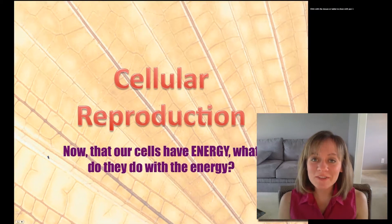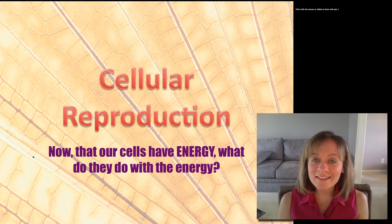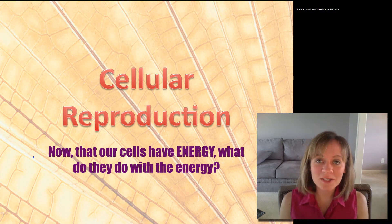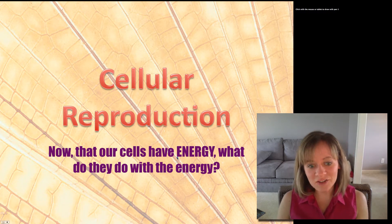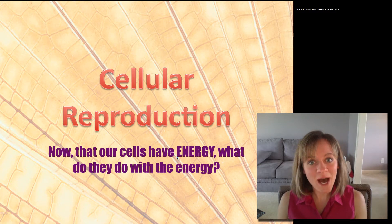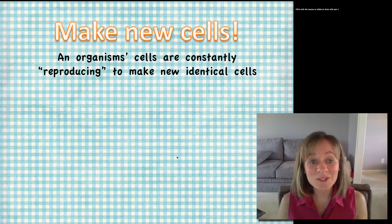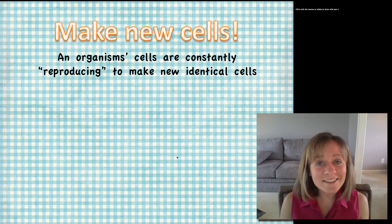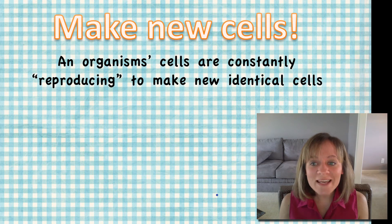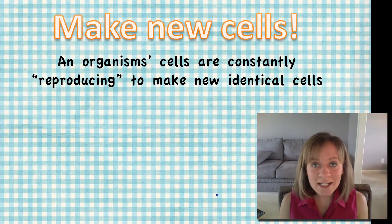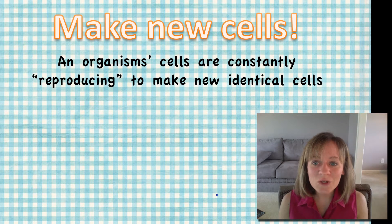Hi class and welcome to the first video for our next unit on cellular reproduction. We just finished learning about cellular energy and how our cells get the energy and what they do with it. Now I want to ask: now that our cells have this energy, what are they really going to do with it? The answer is sometimes they're going to make new cells. An organism's cells are constantly reproducing and making new and identical cells. Your cells are taking in that glucose, making ATP, and using that ATP to make new cells.